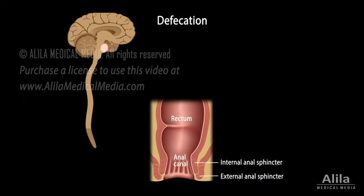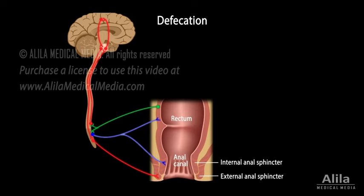When the rectum is full, stretch receptors in the rectal wall send nerve impulses to the sacral region of the spinal cord. By way of a parasympathetic response, signals return to promote rectal peristalsis and relax the internal anal sphincter. This reflex is involuntary. However, defecation can only happen when the external anal sphincter, which is under voluntary control, also opens. This allows delaying defecation until an appropriate time.